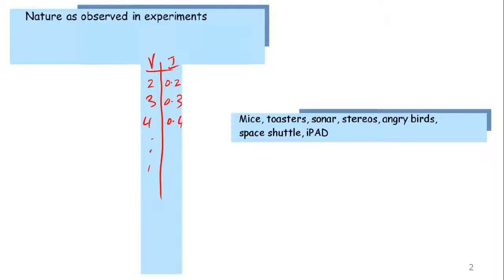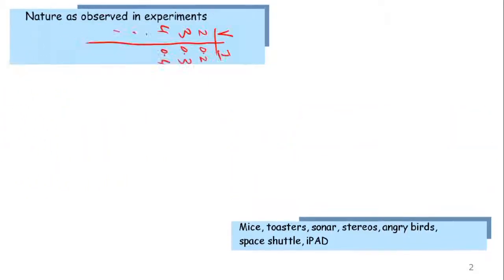So I could take reams of this data and somehow try to build those systems based on all those properties of nature. Now that is clearly a Herculean, if anything, ludicrous task. So what do we do? I mean, this is just too hard. Nobody sits down with reams of data looking at how nature behaves and builds systems. What do we do instead?